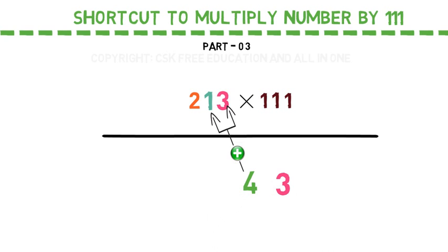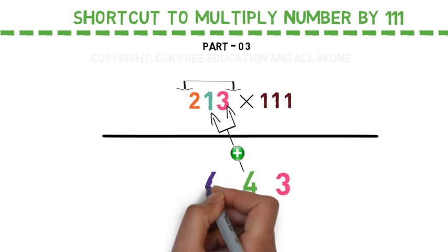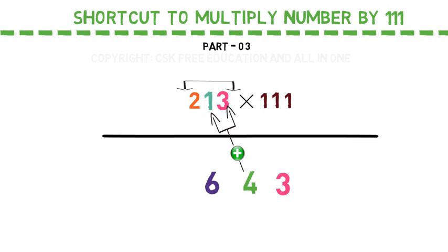Now add all the digits, which means 2 and 1 and 3. The total is 6.